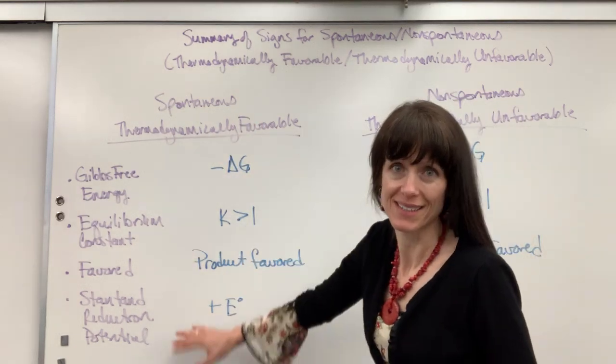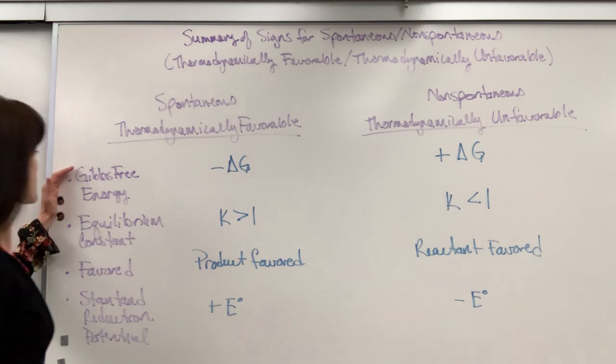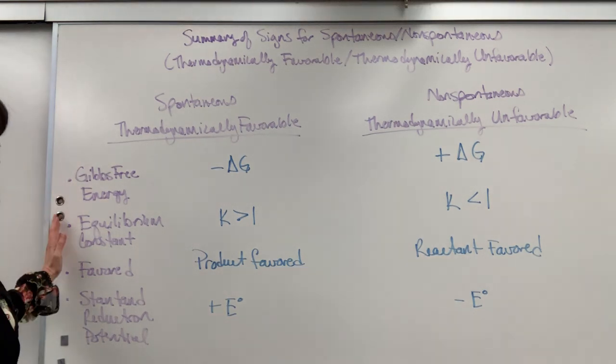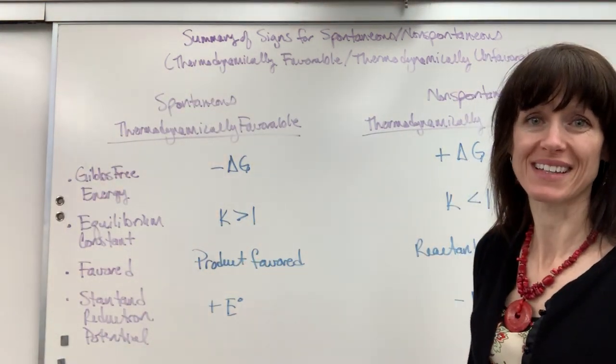So, here we have our spontaneous column, and right here I have my non-spontaneous column. And I've listed for you Gibbs free energy, equilibrium constant, how it's favored, and the standard reduction potential. So, here is your overview of putting it all together.